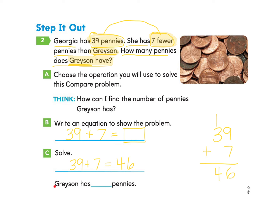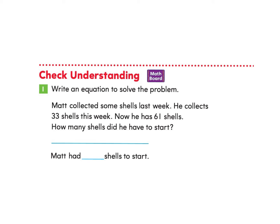And now I have solved the question. Grayson has 46 pennies. Excellent work. Let's go ahead and check for understanding. Problem one. Write an equation to solve the problem.